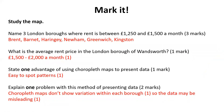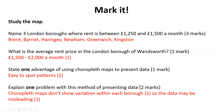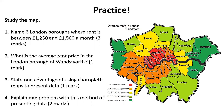Okay, welcome back. Here are the answers to those questions. First, name three London boroughs where rent is between £1,250 and £1,500 a month — it could be any of the boroughs in yellow, such as Brent, Barnet, Haringey, Newham, Greenwich, and Kingston. For the second question, the average rent price in the London borough of Wandsworth — Wandsworth is just south of the river, and it's orange, so that's £1,500 to £2,000 per month.